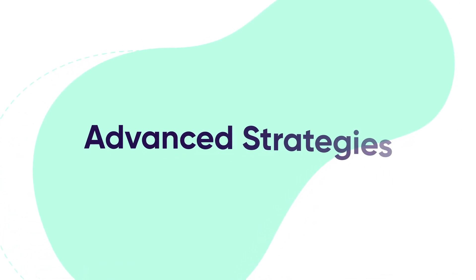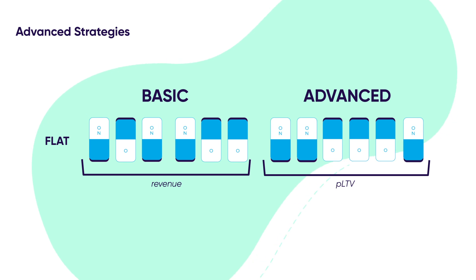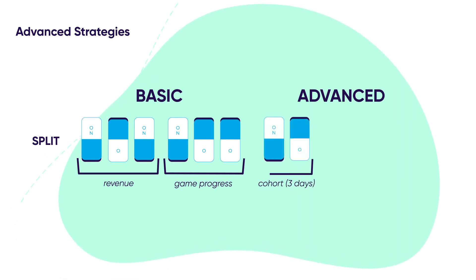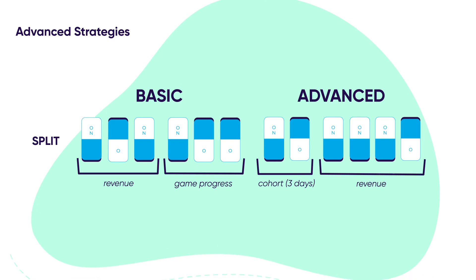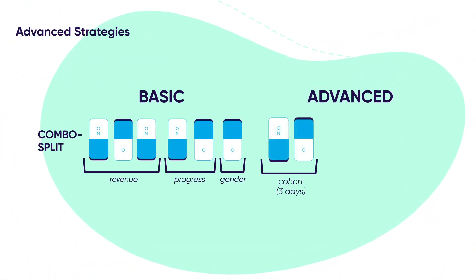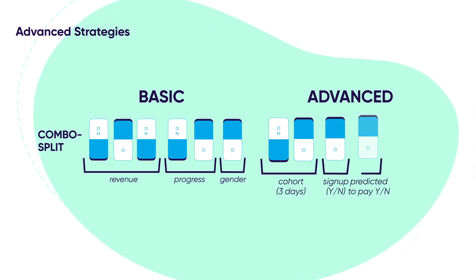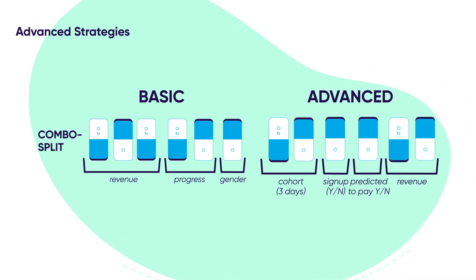Once you have the basic strategies down, there are some more advanced options too. First, you can use the flat splitting method for predictive analytics, for example. Alternatively, an advanced split method might use 2 bits relating to cohort data and the remaining 4 bits to measure revenue. Finally, an advanced combo split method might use 2 bits for measuring 3 days of cohort data, one deterministic signal, and another signal for a value prediction.